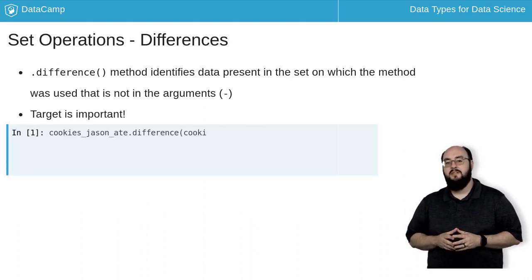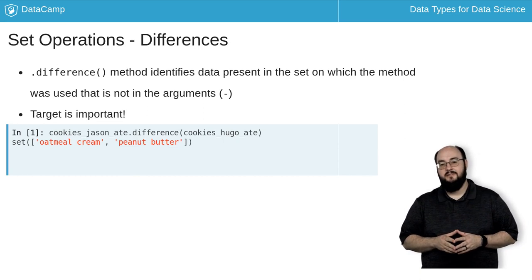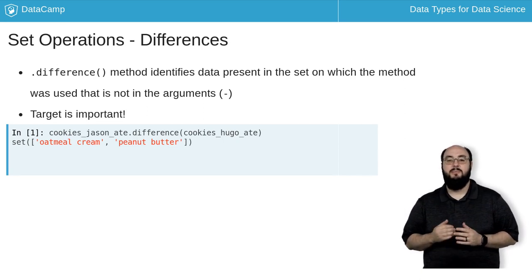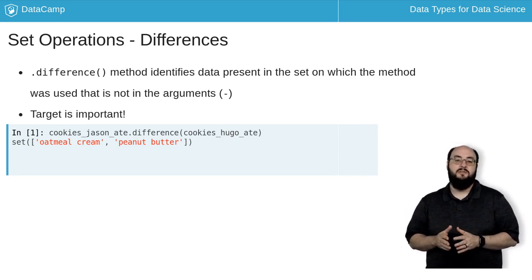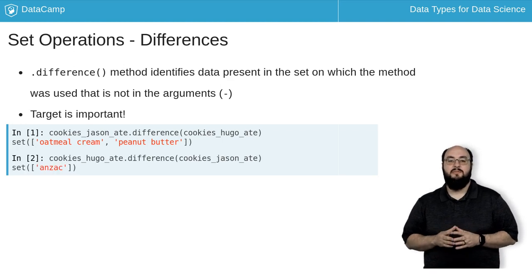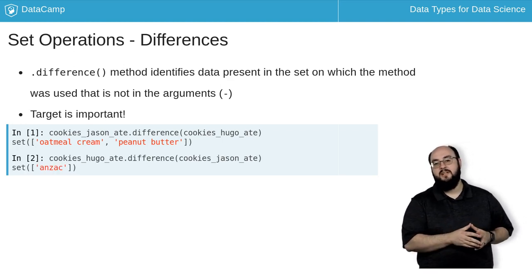So here I want to see the cookies that I ate that Hugo didn't, which I can do by calling difference on my set of cookies and giving it Hugo's set. I can perform the reverse of this operation by using Hugo's set as the target.